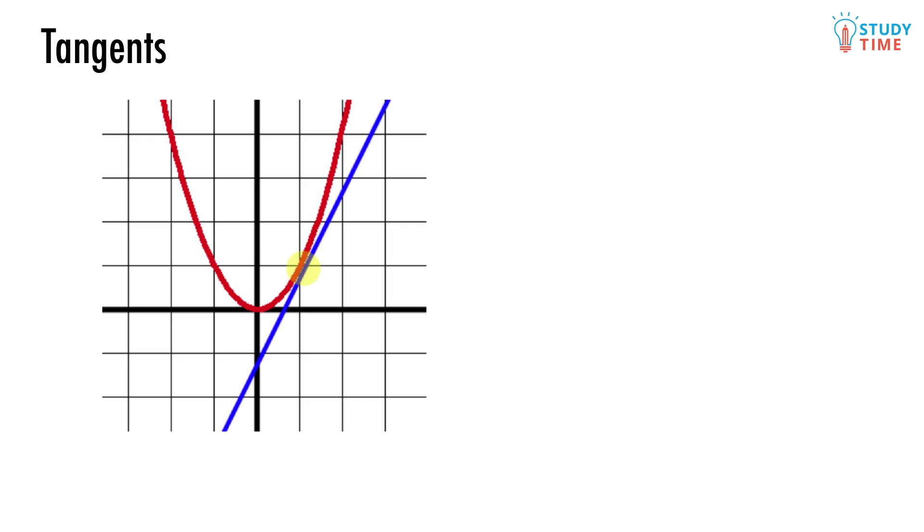The big idea with this particular point is that when x equals 1, the gradient of the tangent is the same as the gradient of the parabola. Since the gradient of the parabola is constantly changing, this split second is the only moment when this is going to happen.